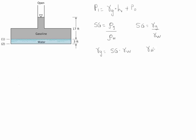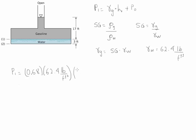We know that the specific weight of water is 62.4 pounds per cubic feet. Using this information we can calculate the value of P1. Note that P0 in gauge pressure is equal to zero. Therefore P1 is simply equal to 0.68 times 62.4 pounds per cubic foot times 17 feet, plus zero. This gives us 721 pounds per square foot.